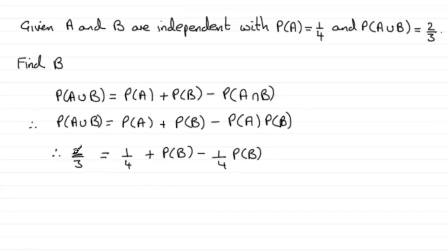So if we take a quarter from both sides, two thirds minus a quarter, we end up with five twelfths. So five twelfths then equals probability of B minus a quarter times the probability of B, so that's going to be three quarters times the probability of B.